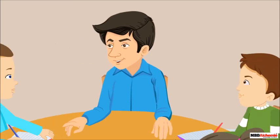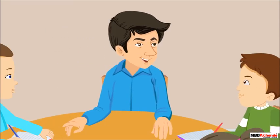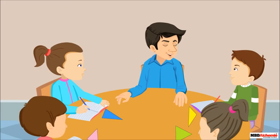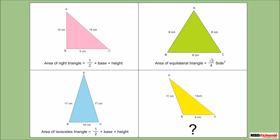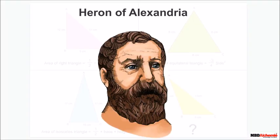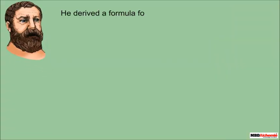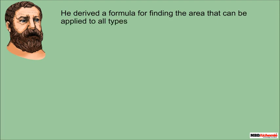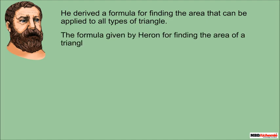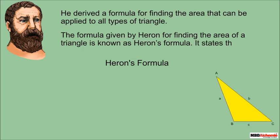Neil's father asks if they think Neil is the only one who ever faced such a problem, then takes them back in history. The great mathematician Heron was also interested in finding the area of any triangle. He derived a formula applicable to all types of triangles — this is known as Heron's formula.